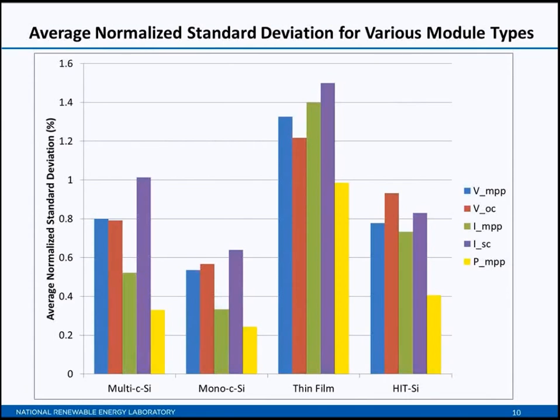This is a list of module models, or groups of module models, that are common to all four databases. You can see that there are a number of different manufacturers represented, from Aleo to Yingli, with a number of modules from Sanyo, Sharp, First Solar, SunPower, and SunTech.